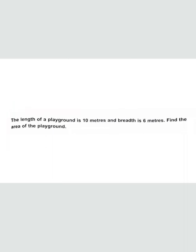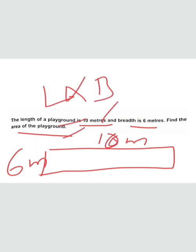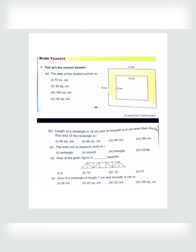Question number six: the length of a playground is 10 meters, breadth is 6 meters — find the area. This is a rectangular shape, so length multiplied by breadth gives 60 square meters. Length is 10 meters, breadth is 6 meters, area equals 10 × 6 = 60 square meters. Now let's move to the brain teaser.